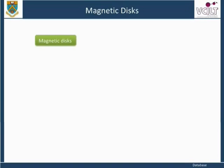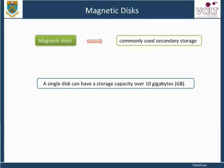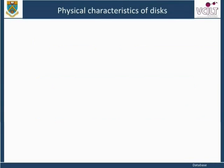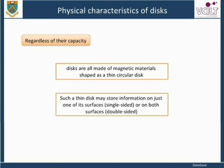Magnetic disks are the most commonly used secondary storage. A single disk can have a storage capacity over 10 GB, and as technology improves, disk capacities continue to grow. Regardless of their capacity, disks are all made of magnetic materials shaped as a thin circular disk. Such a disk may store information on just one of its surfaces, single-sided, or on both surfaces, double-sided.